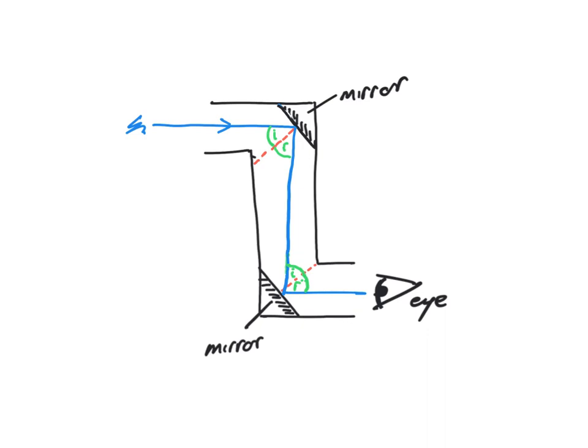Because this is a ray diagram, we need to show the direction of travel of the light rays. And so that is how the light will pass through a periscope, as illustrated by a ray diagram using the law of reflection, which states that the angle of incidence is equal to the angle of reflection.